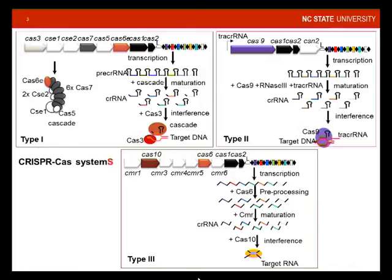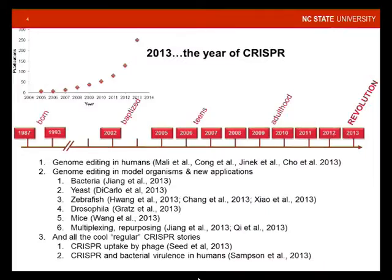Though CRISPR loci were first identified in the E. coli genome in 1987, the CRISPR acronym itself wasn't coined until 2002. Initially, the primary focus of studies on CRISPR-Cas systems was for genotyping purposes, based on the number and sequence of spacers in those loci, because iteratively over time, newly acquired spacers provide a unique genetic path that is time-dependent, allowing people to backtrack genetic acquisition events for a specific bacterial or archaeal strain.